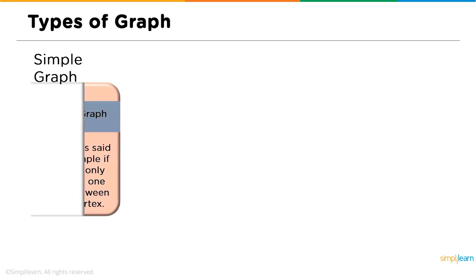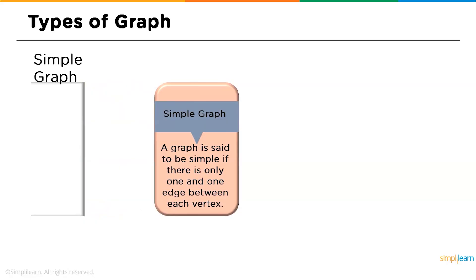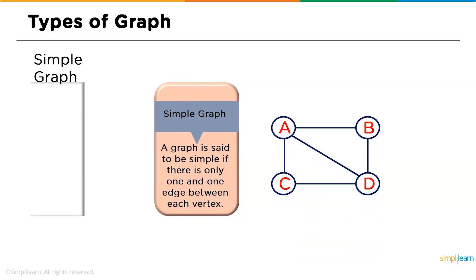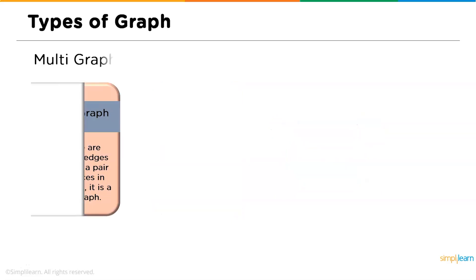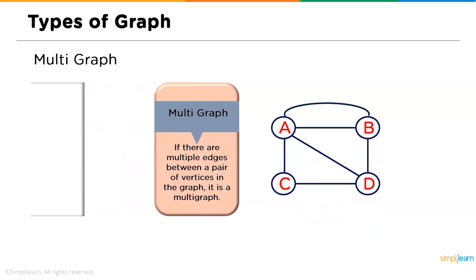Followed by trivial graph we have the simple graph: a graph is said to be simple if there is only one edge between each pair of vertices. Next we have the multi graph: if there are multiple edges between a pair of vertices, the graph is known as a multi graph. For example, vertices A and B can have two edges connecting them, unlike a simple graph which allows only one.